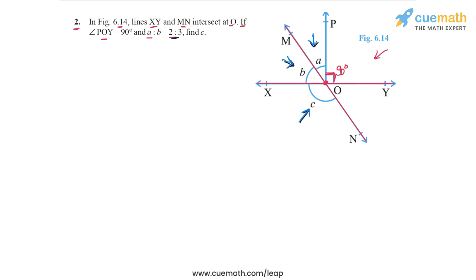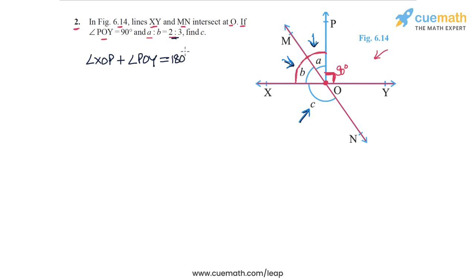Observe angle XOP — this angle. What do you think is the measure of this whole angle? Well, angle XOP forms a linear pair with angle POY, and angle POY we know is 90 degrees. So from here we can find angle XOP. Let's write: angle XOP plus angle POY is equal to 180 degrees, because these two angles form a linear pair.